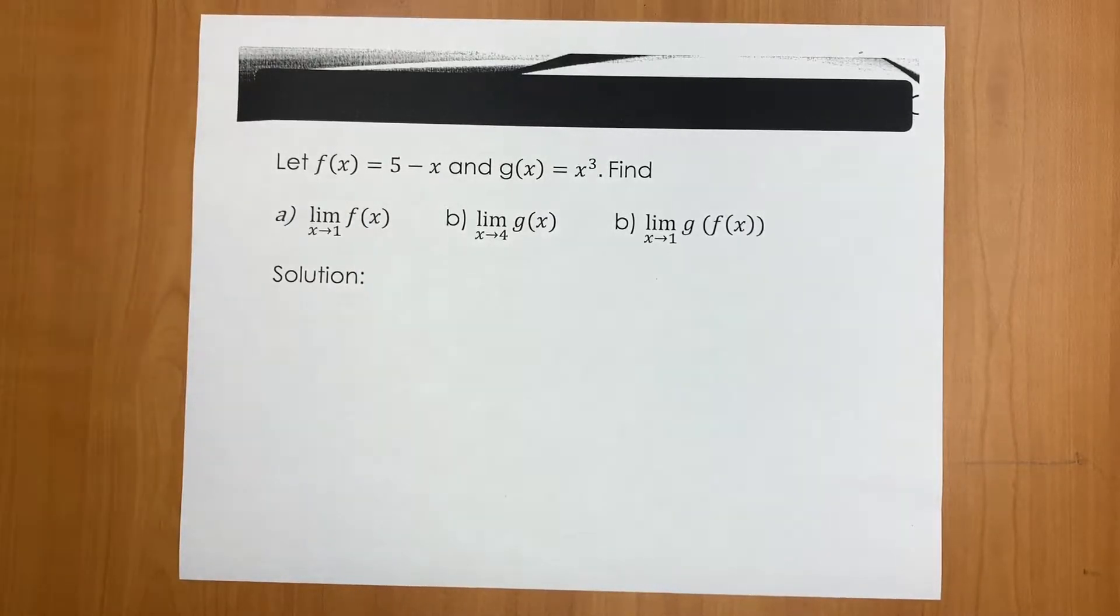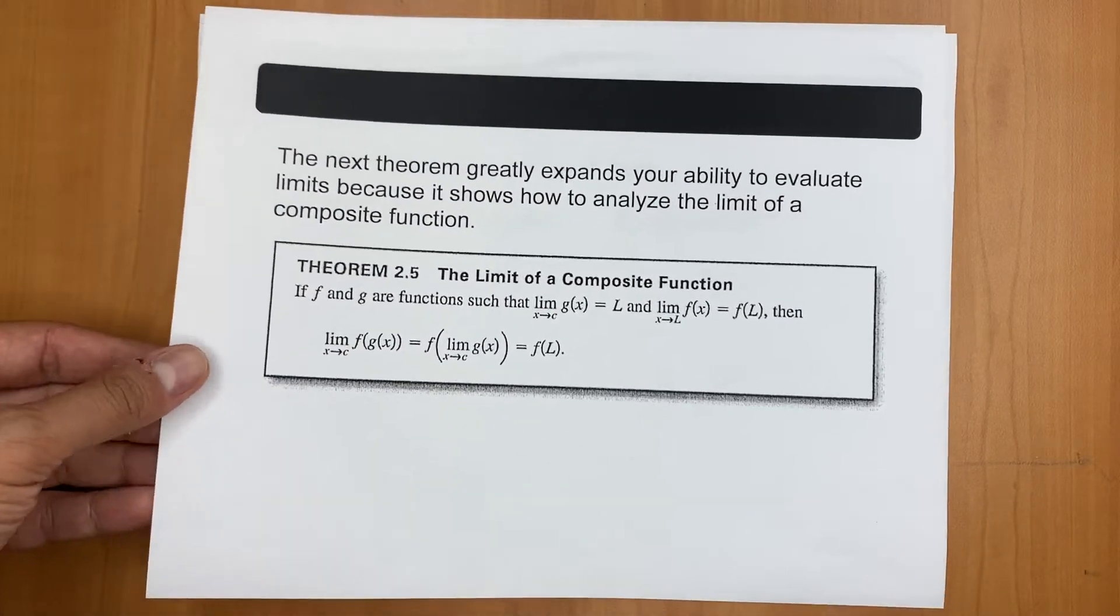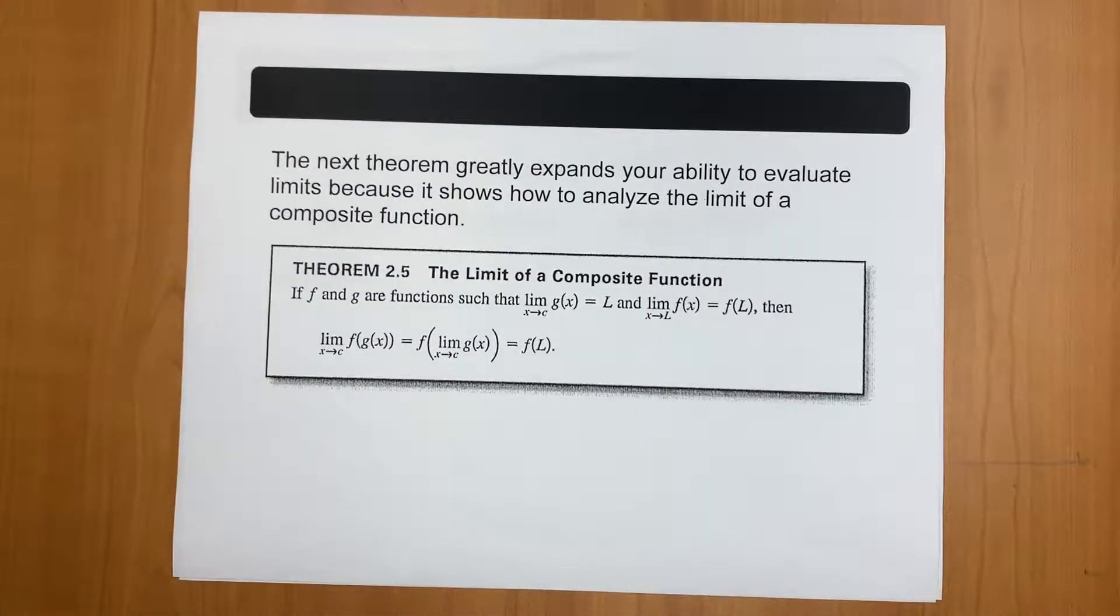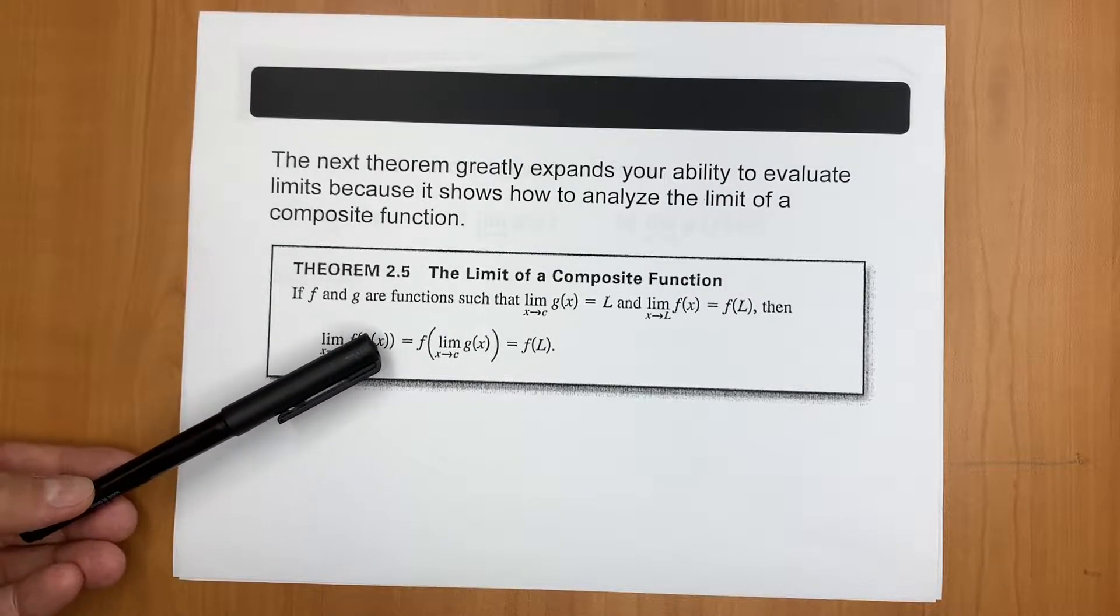At this point, I want to remind you that the limit property for composite functions essentially says that if we have two functions, you can talk about the limit of a composite function. You can compose two functions in two different ways. If f and g are given to you, one could be f composed by g, and the other one could be g composed by f. So in this particular case, we're talking about composing f by g.